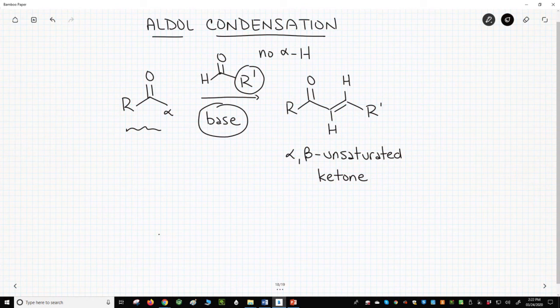As a result of this limitation, the best aldol condensations tend to be on aromatic aldehydes. So the R group tends to be some type of aromatic ring. No alpha hydrogens.